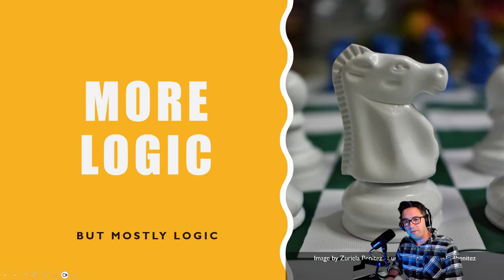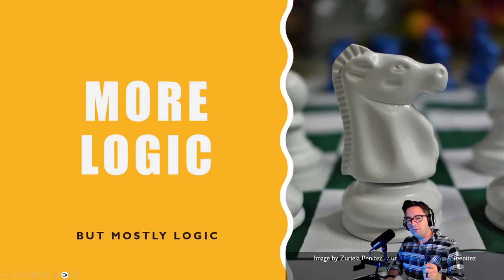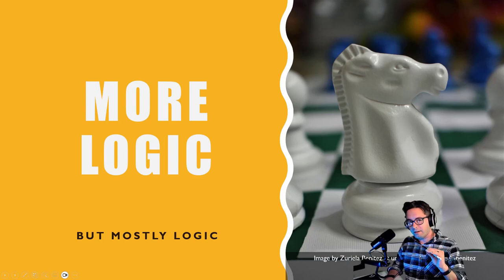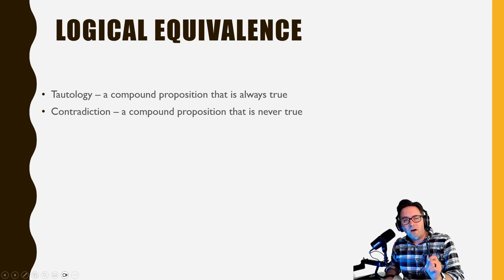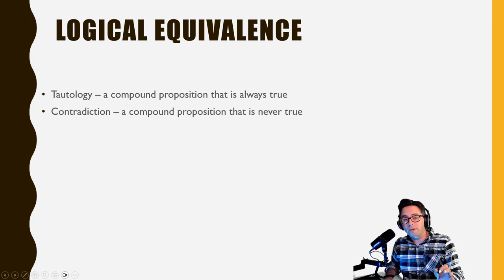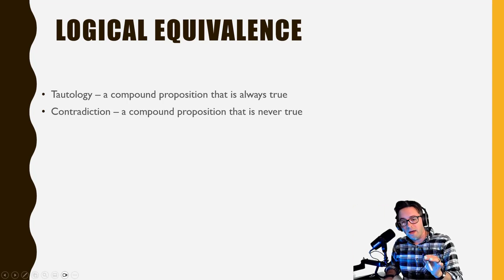Anyways, let's move on to the rest of logic. So far we've introduced propositions and we're going to take them to the next level. The first thing we're going to talk about is tautologies and contradictions. Tautologies are compound propositions that are always true, whereas a contradiction is a compound proposition that is never true. I'll go through two examples of each.